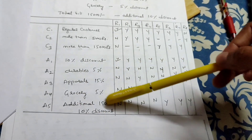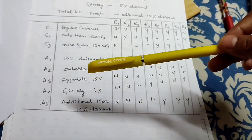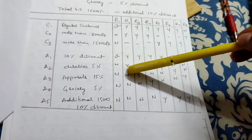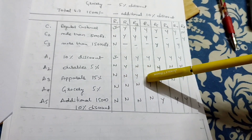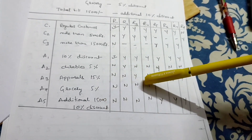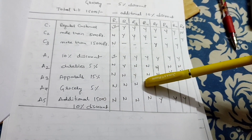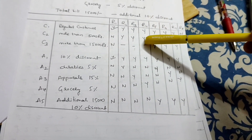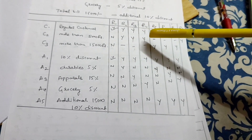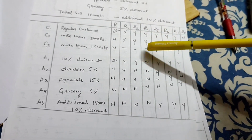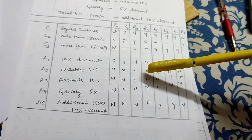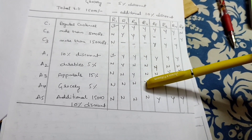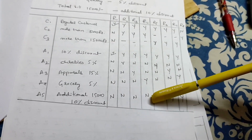If the customer chooses durables, they get 5% discount. If apparels, yes — 15%. If groceries, yes — 5%. For rule R4: regular customer buying more than 5,000 rupees gets 10% discount. Then durable, apparel, or grocery discounts apply accordingly. The total bill is not more than 15,000 — no additional discount.